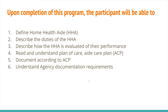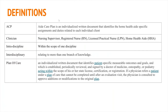Some basic definitions before we get into the content. ACP refers to an aide care plan, which is an individualized written document that identifies the home health aide's specific assignments and duties related to each individual client. In regards to these presentations, the nurse and supervisor refers to the registered nurse, LPN, or whatever clinician is providing a service in the client's home.